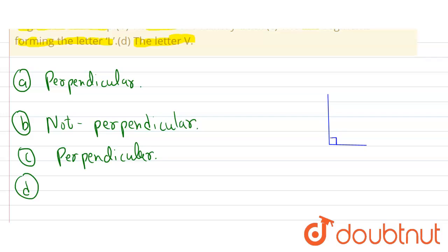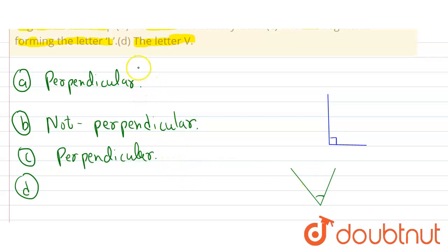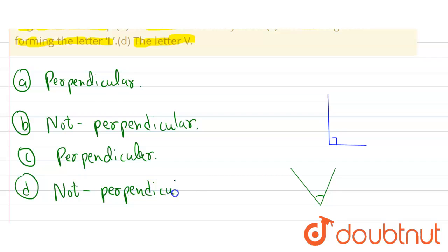Now let's see Part D, which is the letter V. We can see that the angle formed in the letter V is not equal to 90 degrees, so it is not perpendicular. Therefore, the letter V does not represent a model for perpendicular lines.